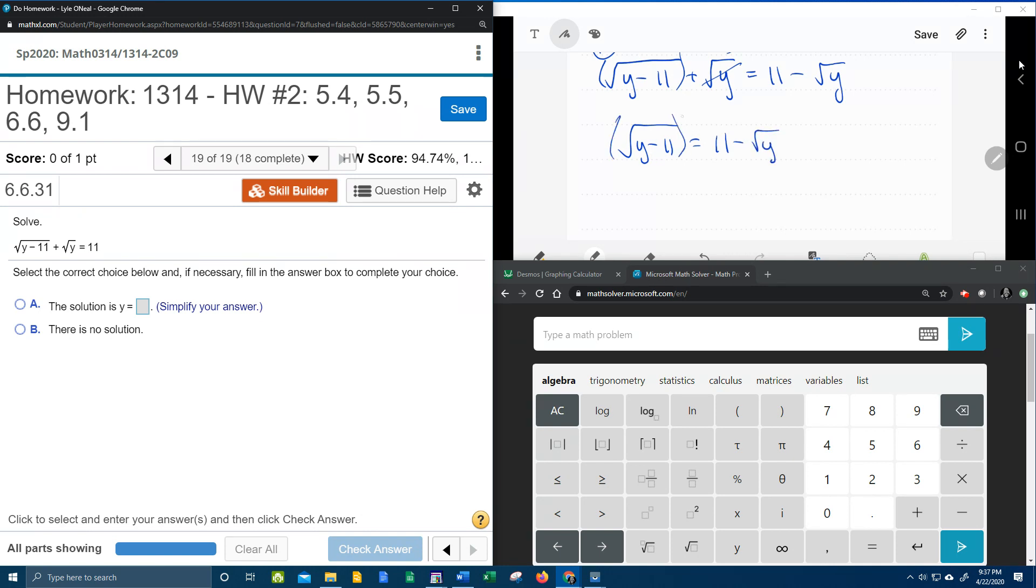On the other side we have 11 minus square root of y. Now that this radical is isolated, we can square to get rid of the square root, but whatever I do to one side, I have to do to the other, so I'm going to have to square both sides. So this one is easy. The square and the square root cancel, that's going to leave us y minus 11.